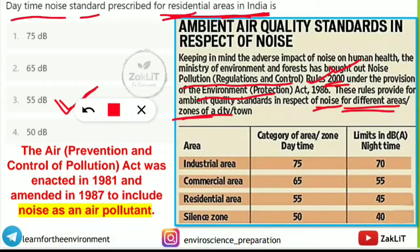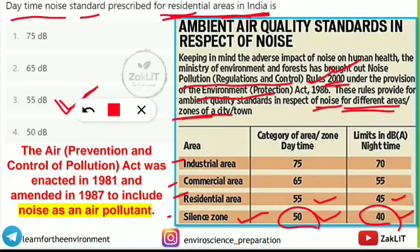As per these rules, the silence zone nighttime limit is 40 decibels and daytime is 50 decibels. For residential areas, the nighttime limit is 45 decibels and daytime is 55 decibels. For commercial areas, daytime is 65 decibels, and nighttime is 55 decibels. For industrial areas, the nighttime limit is 70 decibels and daytime is 75 decibels. This table is very important and frequently asked.